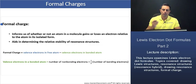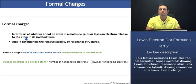Firstly, what does the formal charge tell us? The formal charge informs us of whether or not an atom in a molecule gains or loses an electron relative to the atom in its isolated form. Once you find the number of valence electrons in the atom in a molecule from the Lewis electron dot structure and compare that to the isolated form of the atom, if the valence electrons are not equivalent for the two atoms, then the atom in the molecule has either gained or lost electrons and is therefore said to have a formal charge.